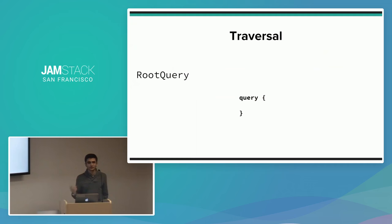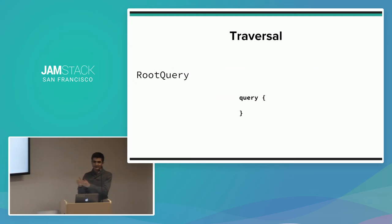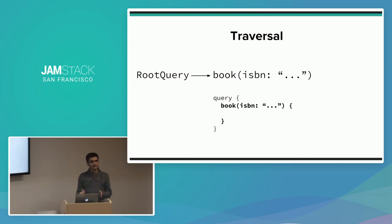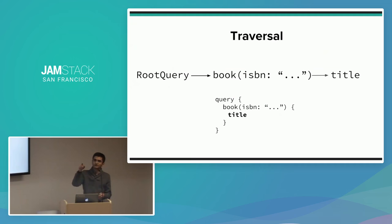How does this traversal work? GraphQL defines a root query, which is where you start when traversing your application data graph. In your schema, you define your root query so it can lead to specific nodes. A query starts at the root query, then a selection set representing the query path finds a book with a given ISBN, and finally follows another edge to return the title — giving you the final result tree.